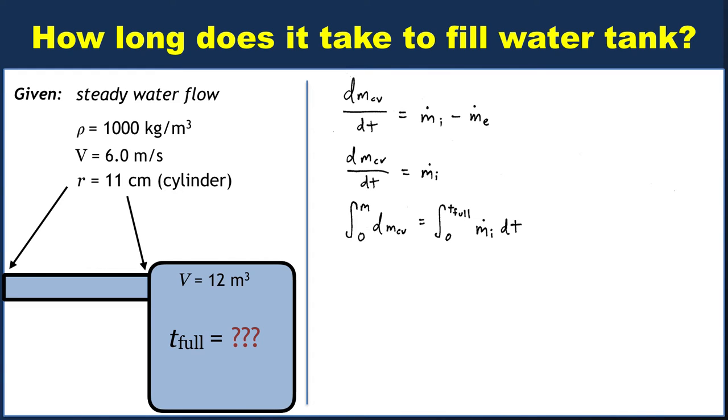But the nice thing is m dot i is constant, doesn't vary with time, so both of these are very trivial integrals. Left hand side is just the total mass, the right hand side is m dot i times t full. So we can solve for t full, and we see that it's the total mass divided by m dot i. Relatively straightforward, but of course now we need expressions for both m and m dot i. We're not given either one directly.